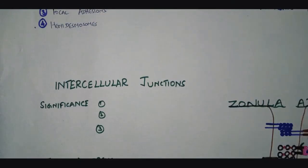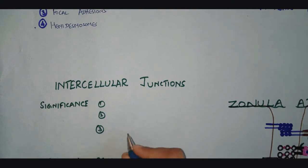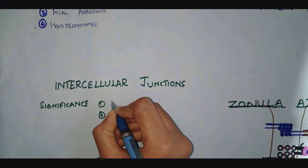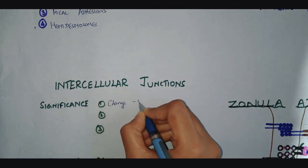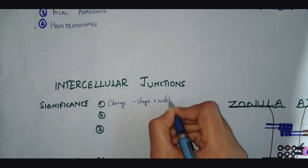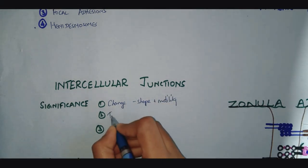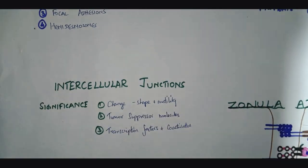Before moving on to the various types of intercellular junctions, we can see the significance of the plaque proteins. These plaque proteins interact with the cytoskeletal elements, and through that they can result in changes in the shape and motility of the cell. They also interact with tumor suppressor molecules and act as nuclear transcription factors and coactivators.